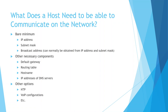Other necessary components to be effective on the network and communicate between networks — internetworking — include a default gateway and a routing table. Hosts that we interact with, like servers and computers, operate at layer seven, so they do have the ability to have a routing table. We need a routing table to make sure we can reach the networks we need to get to.